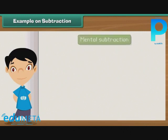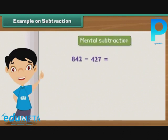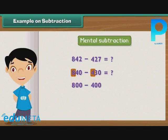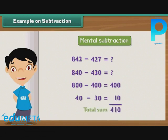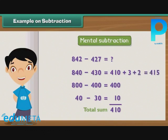Let us practice mental subtraction. Subtract 427 from 842. To simplify subtraction, let us convert 427 to 430 and 842 to 840. To subtract 430 from 840: first, subtract 400 from 800 to get 400, then subtract 30 from 40 to get 10. Therefore, the difference between 840 and 430 is 410. But we subtracted an additional 3 when we subtracted 430 instead of 427, so we add 3 to the difference. We also left out 2 when we subtracted from 840 instead of 842, so we add 2 more. Thus, the result of subtracting 427 from 842 is 415.